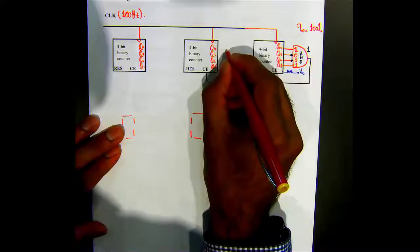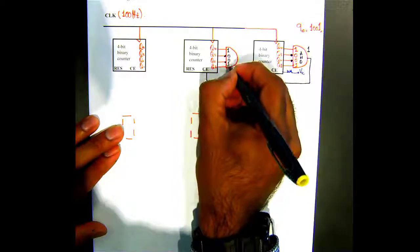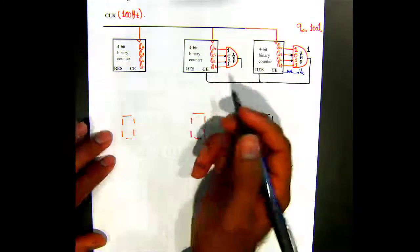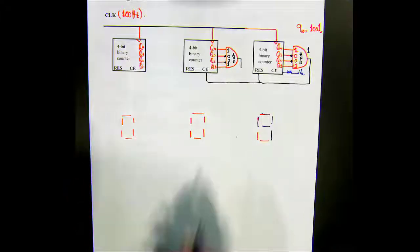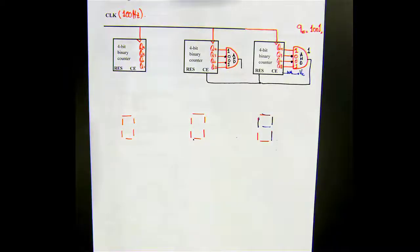All right, and again I'm going to need another AND gate here. Right, now when this reaches nine we want to reset it to zero. How should be the wiring? Where the output of AND gate should go? Yes, to the reset. Anything else? The enable, to the enable of the next one.